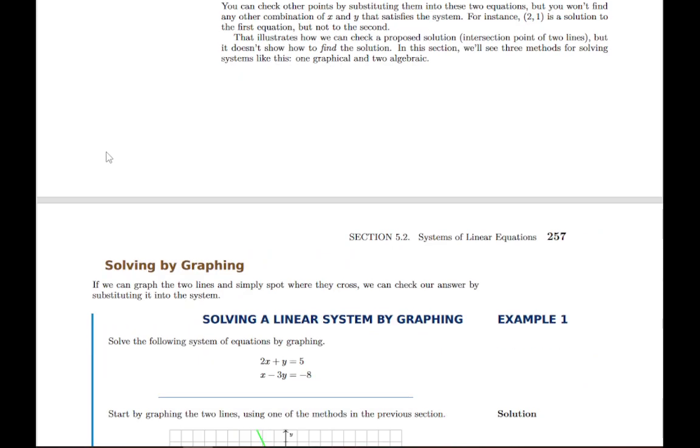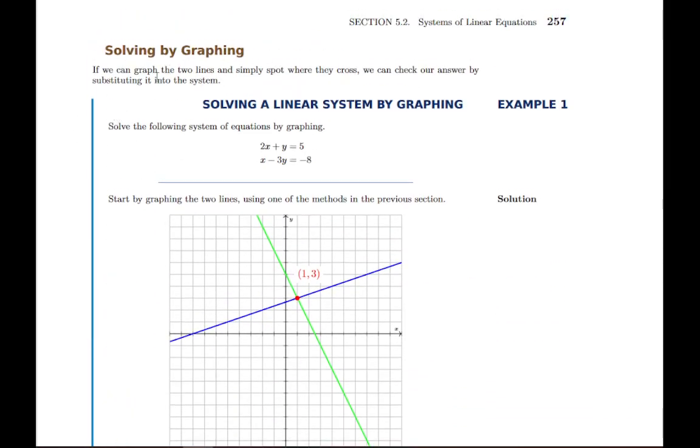So there are several ways of doing this. Number one, we can do this just by graphing. If we can graph both lines and see where they cross, we can just read off that intersection, like in this example where they cross at the point. We can always check an answer like this by plugging in x equals one and y equals three to both equations and make sure that it satisfies or fits into both equations.